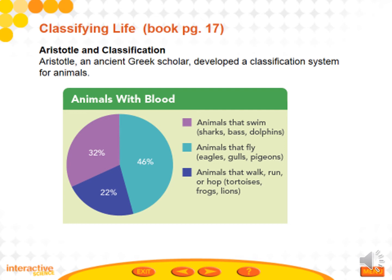Linnaeus worked off of earlier information — possibly Aristotle and others. Aristotle had a good start, but it just didn't work. He categorized animals with blood into three groups: animals that swim, animals that fly, and animals that run, walk, and hop. But there are problems — a tortoise ends up in the same category as a lion, and those things are very different. It was a nice start, but it didn't do what we needed, and that's when Linnaeus jumped in.